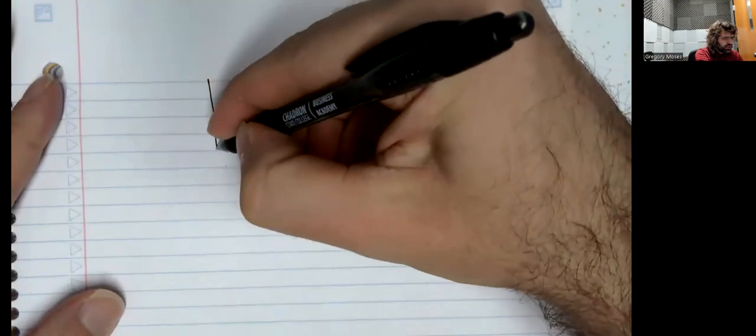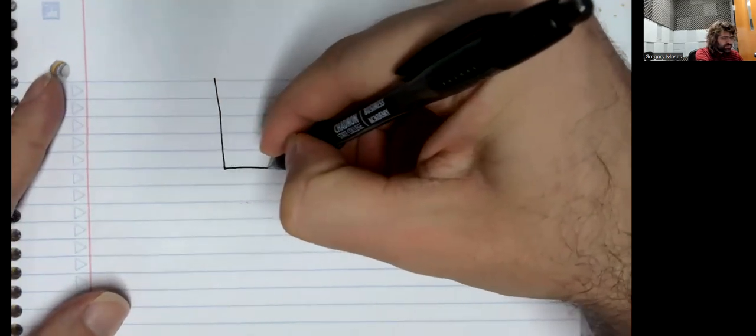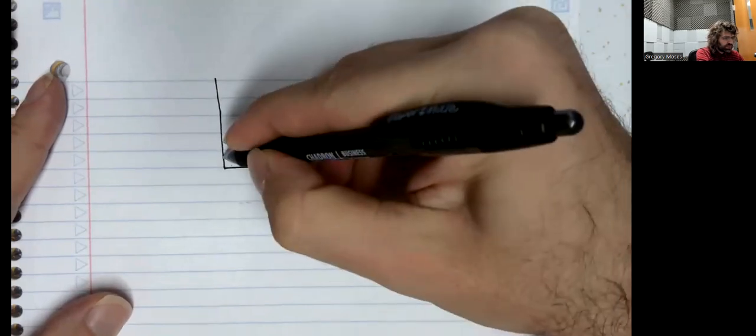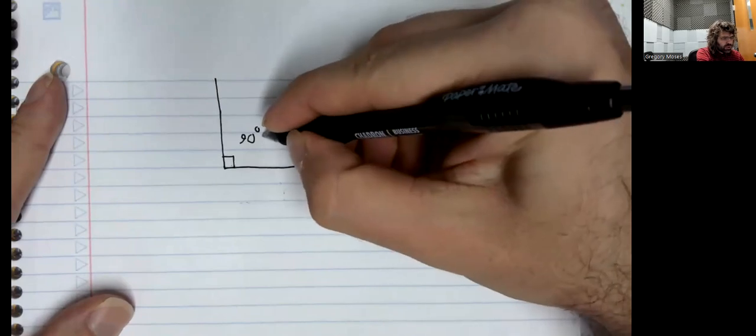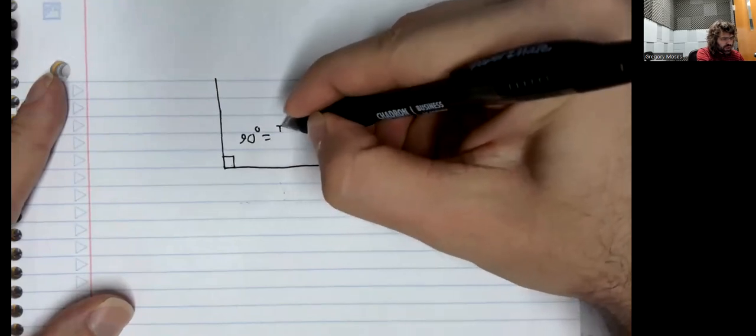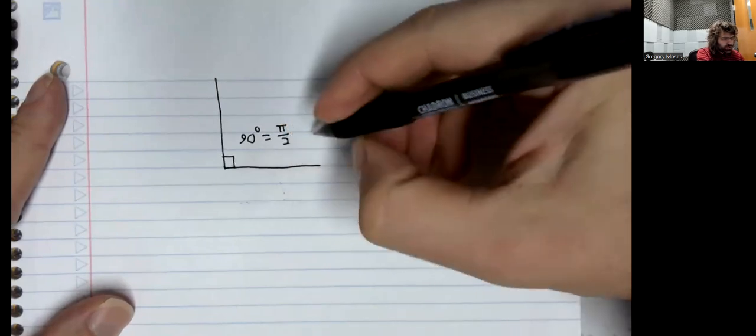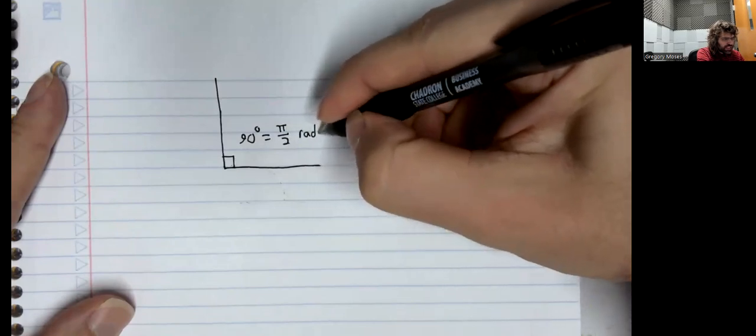And for reference, a 90-degree angle is pi over 2 radians.